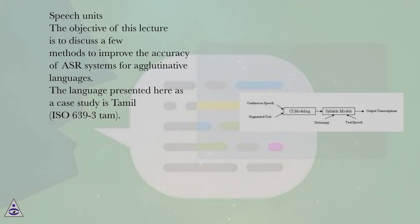Speech Units. The objective of this lecture is to discuss a few methods to improve the accuracy of ASR systems for agglutinative languages. The language presented here as a case study is Tamil, ISO 639-3 tam.